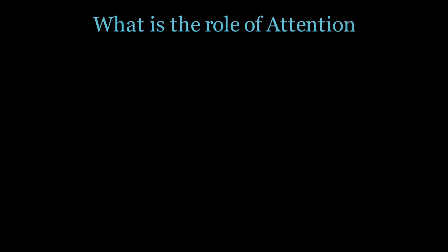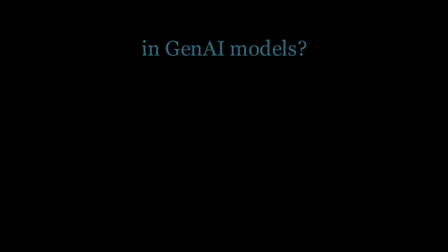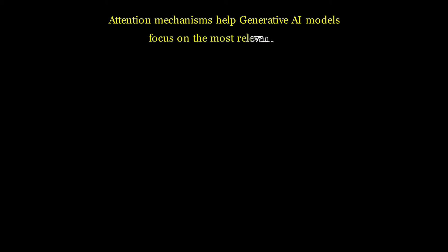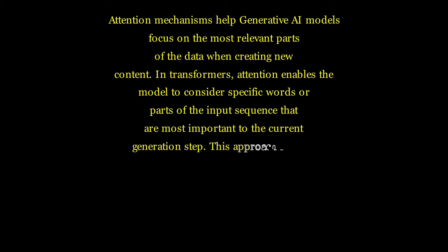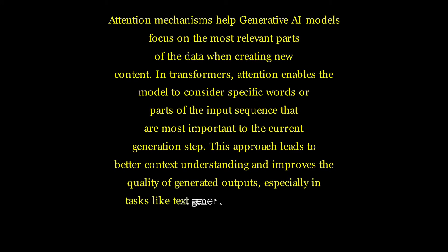What is the role of attention in generative models? Attention mechanisms help generative AI models focus on the most relevant parts of the data when creating new content. In transformers especially, attention enables the model to consider specific words or parts of the input sequence that are most important to the current generation step. This approach leads to better context understanding and improves the quality of generated outputs, especially in tasks like text generation where coherence is essential.